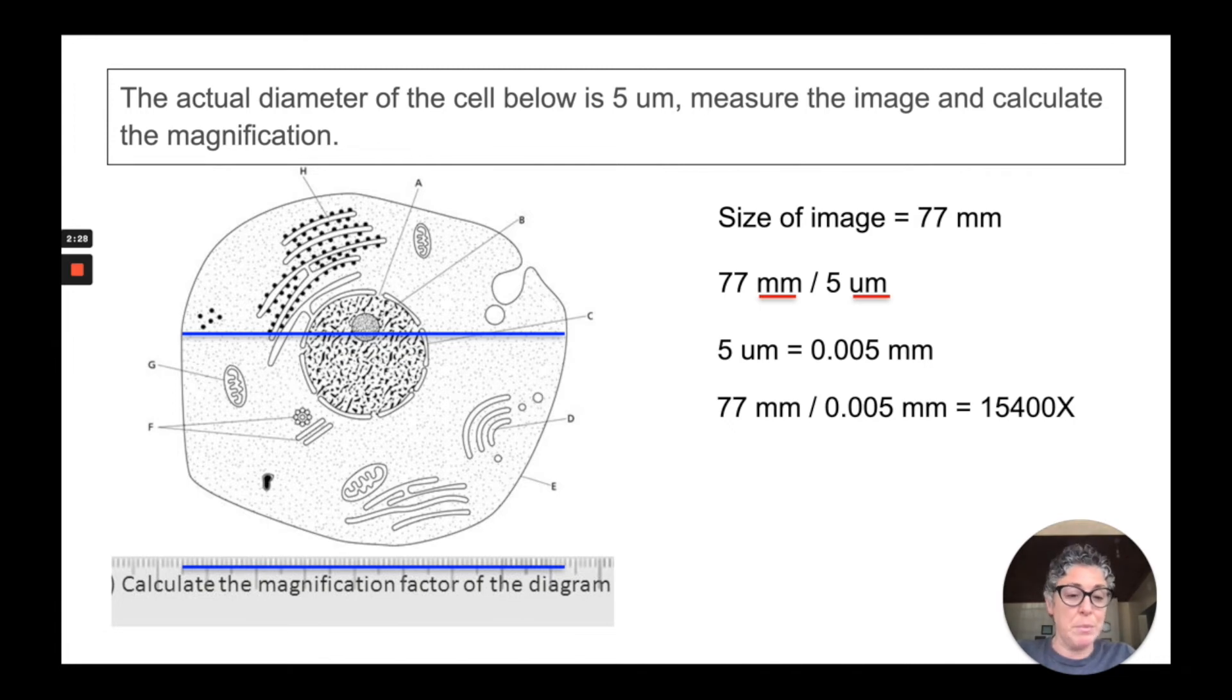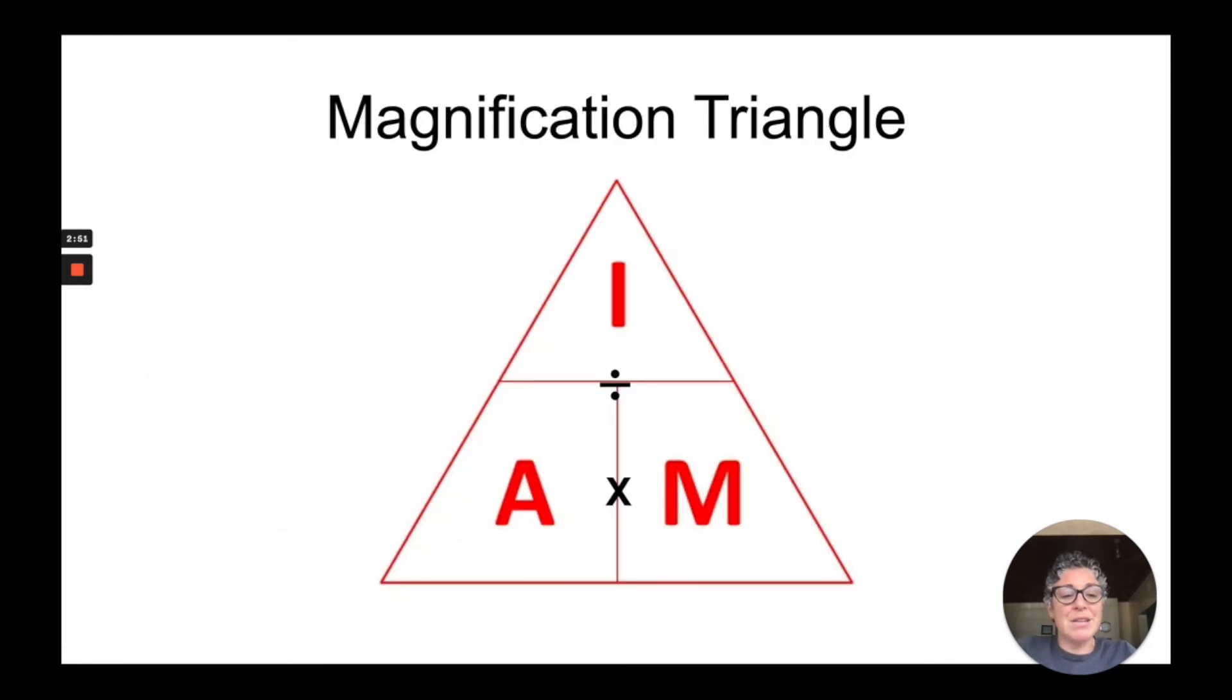We set up our problem, do the math, and we can calculate the magnification to be 15,400 times magnification for the actual cell that was 5 micrometers in size magnified to 77 millimeters. These magnification equations do not need to be memorized.